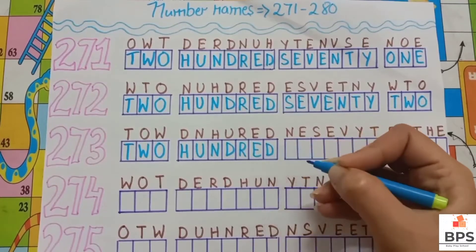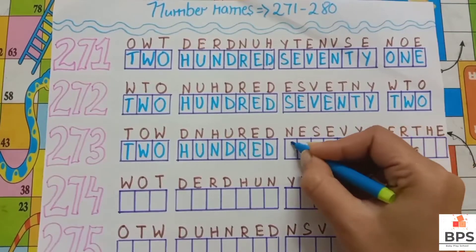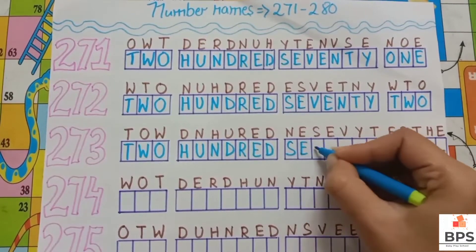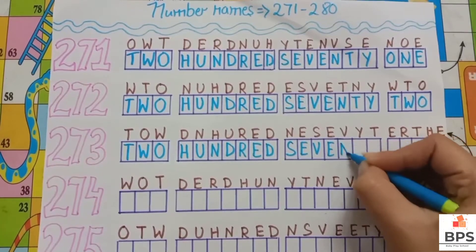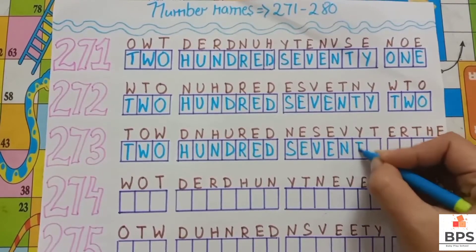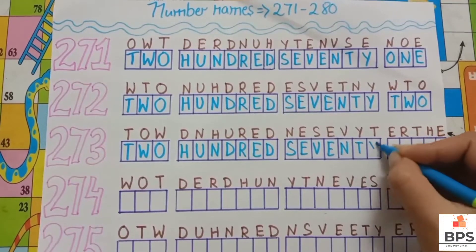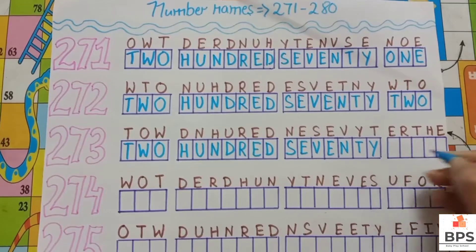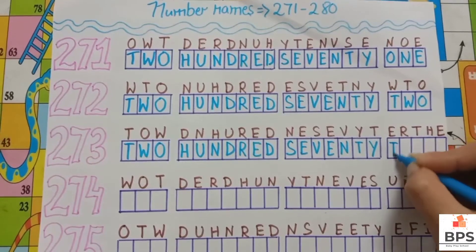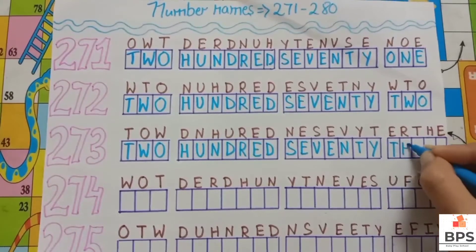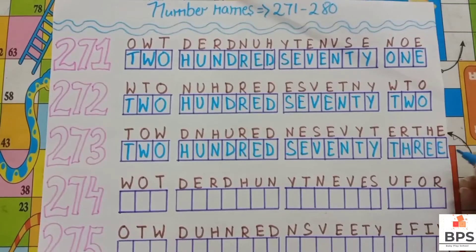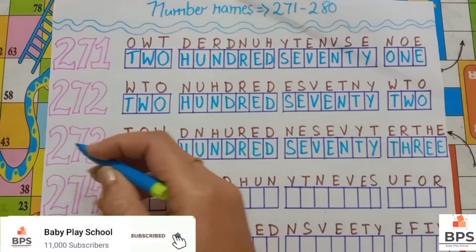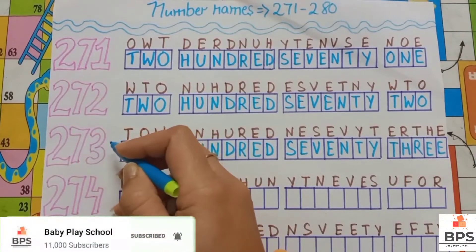273: T, W, O, 2, H, U, N, D, R, E, D, 100, S, E, V, E, N, T, Y, 70, T, H, R, double E, 3. 273.